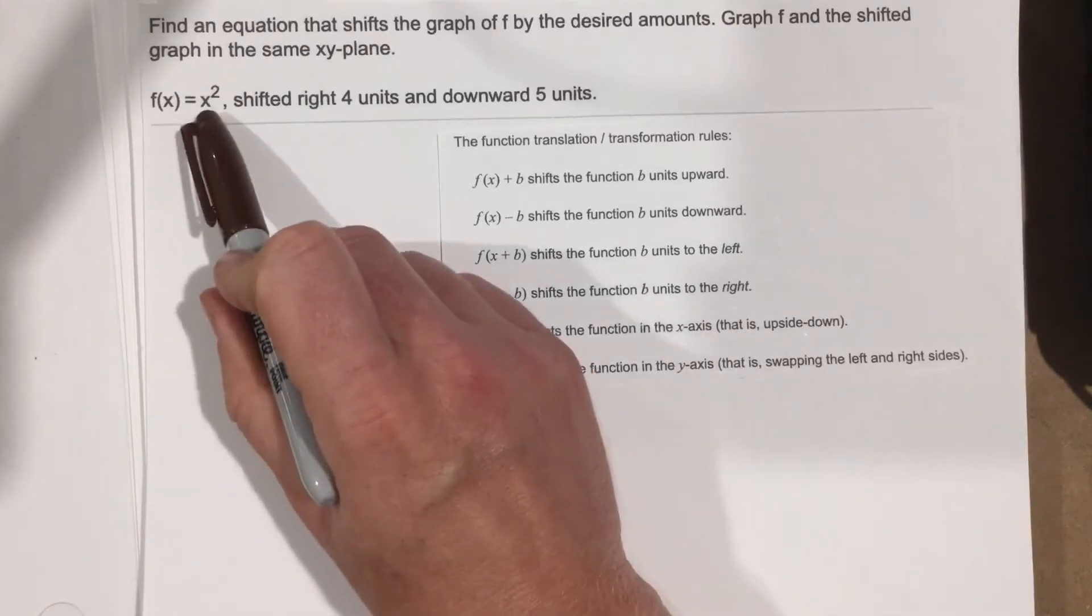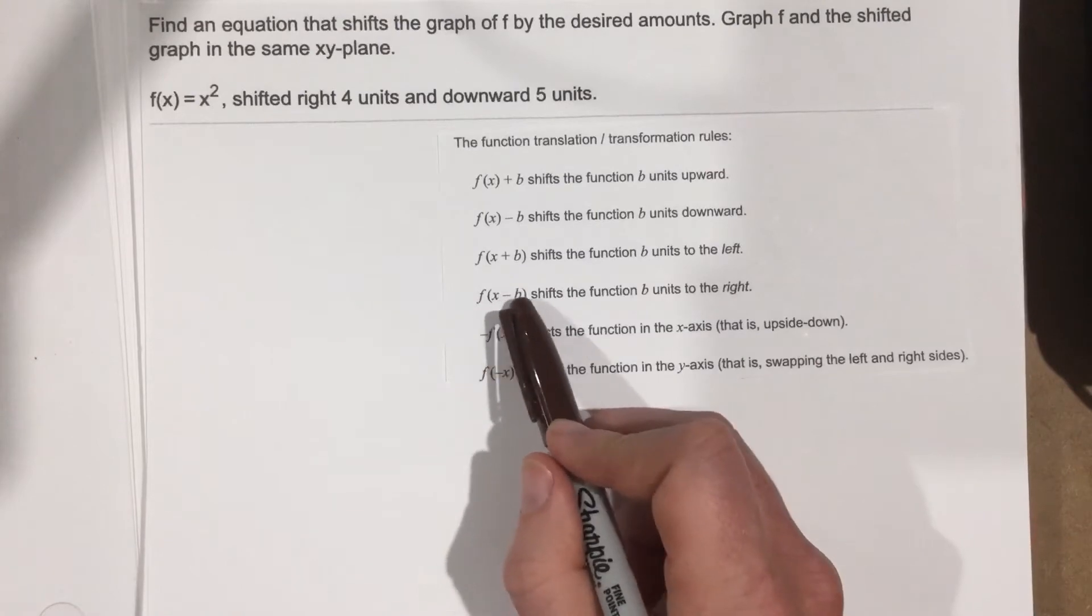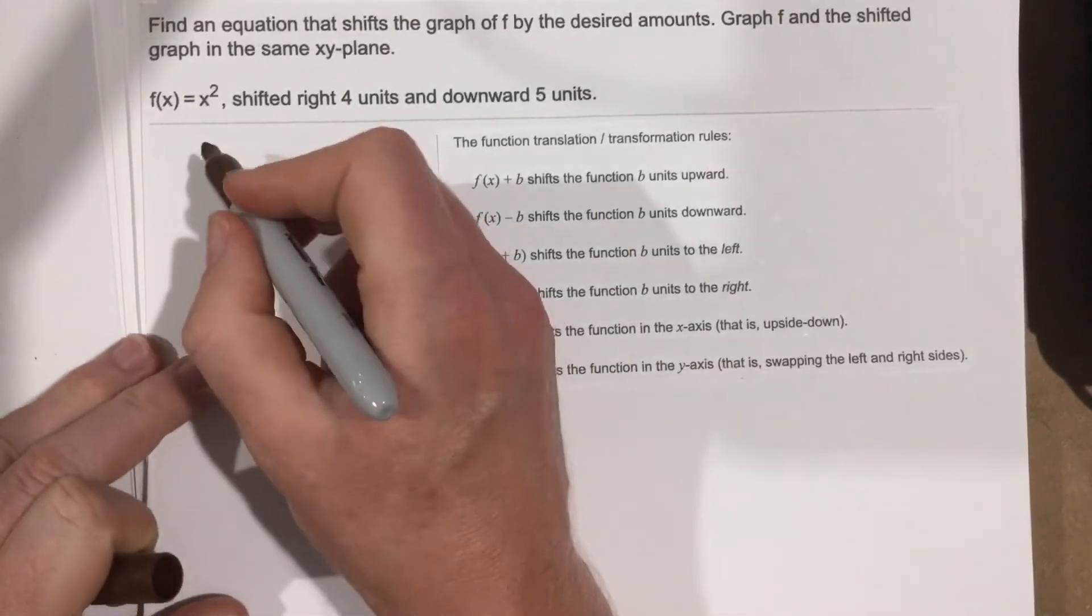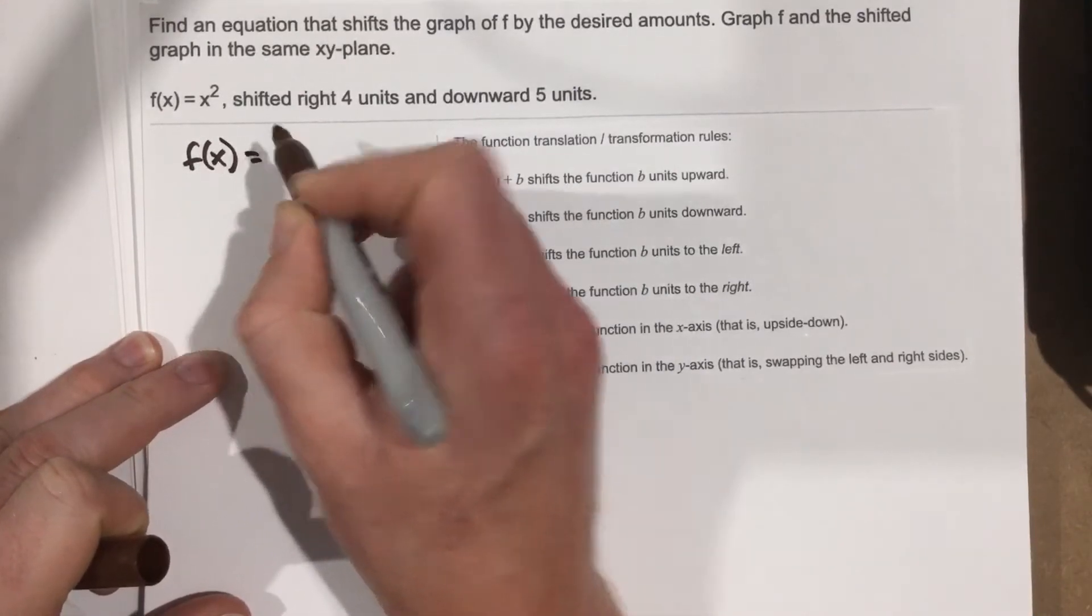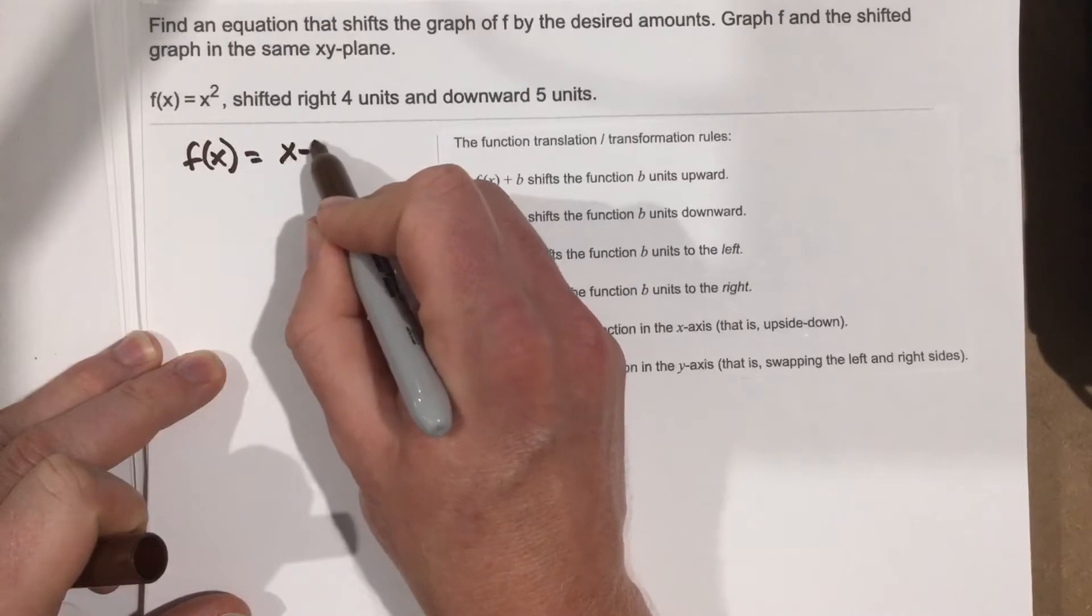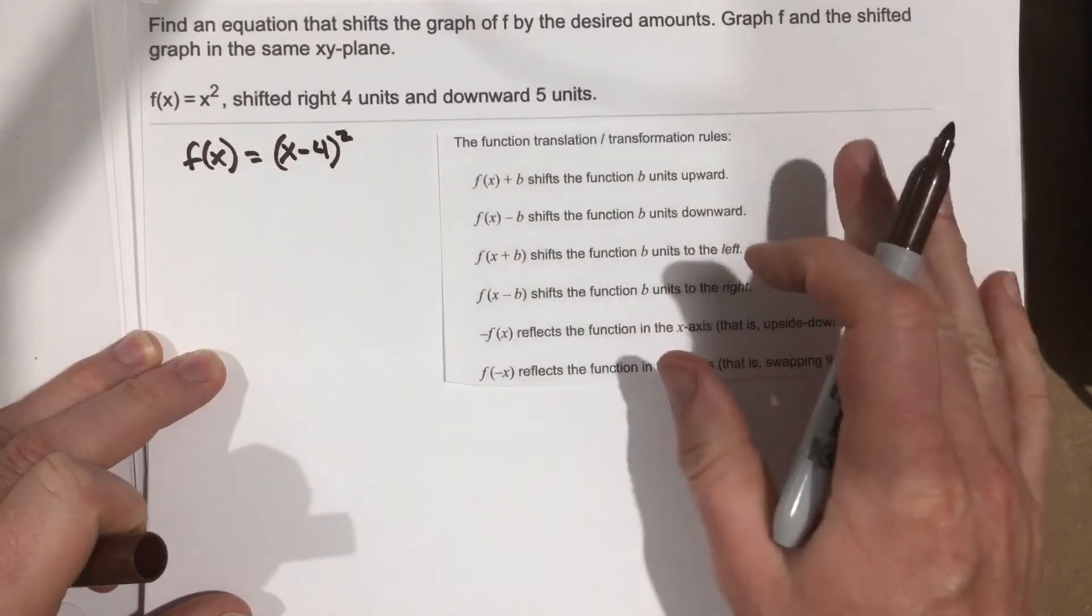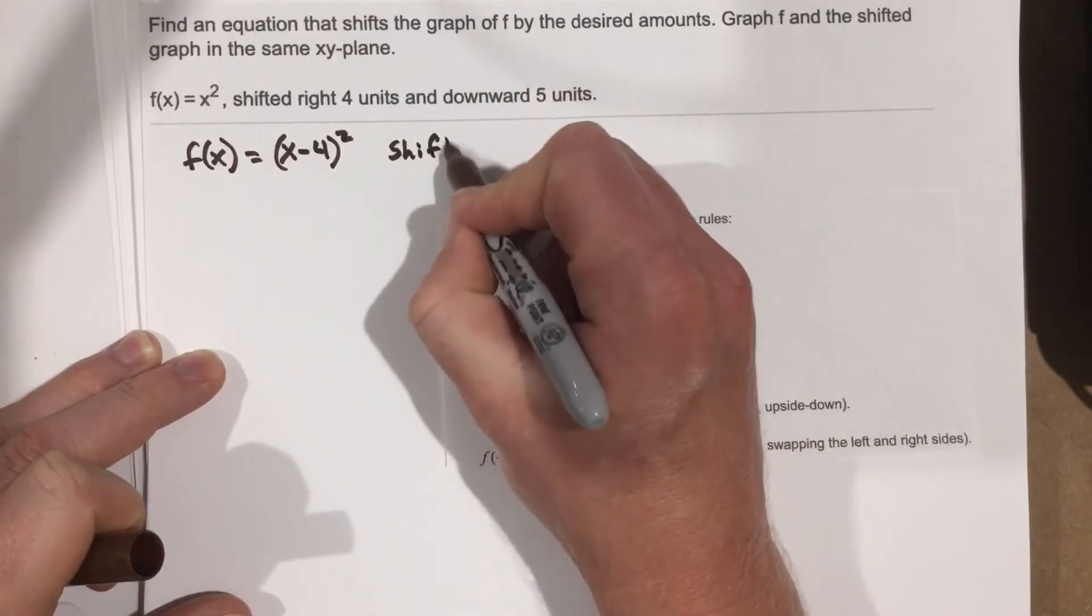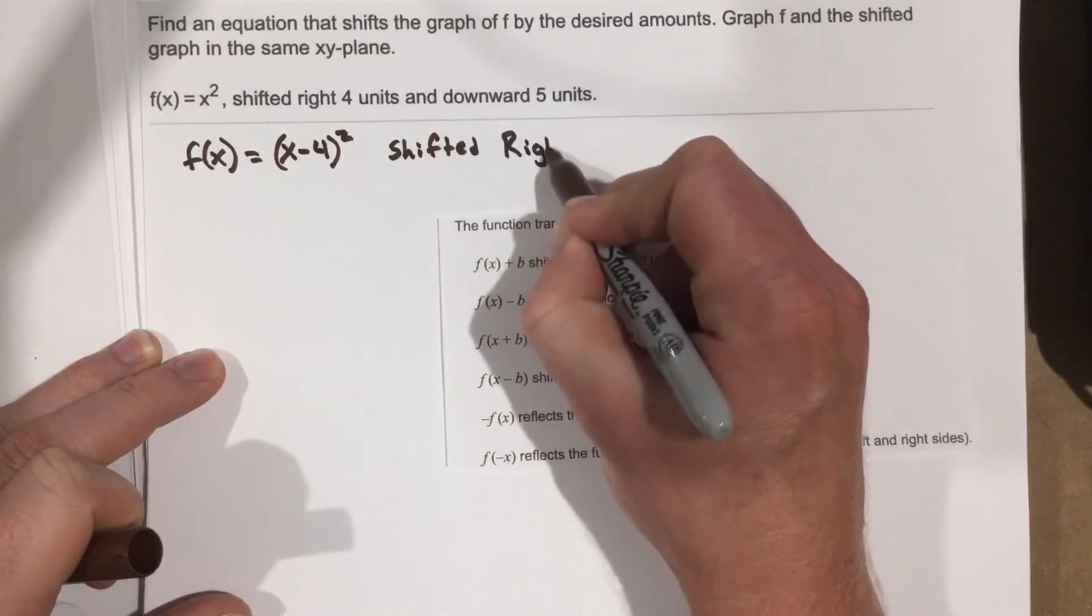So it means take the function and where you have the input x, put minus b there. Well, I want to shift it to the right 4 units. So I'm going to say f of x equals x minus 4 squared. And this is shifted right 4 units.